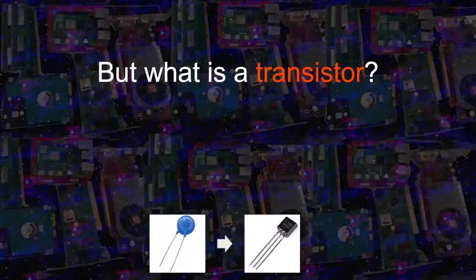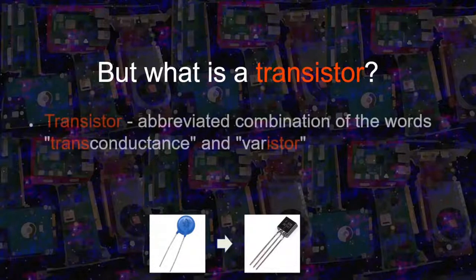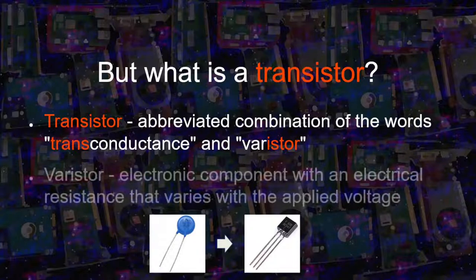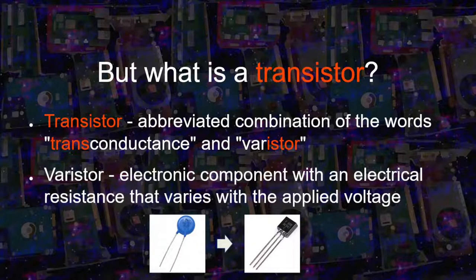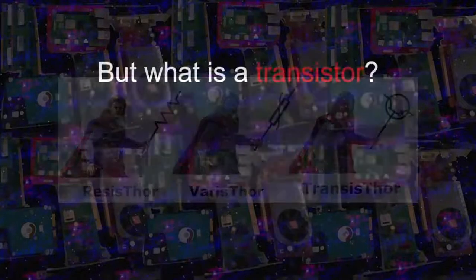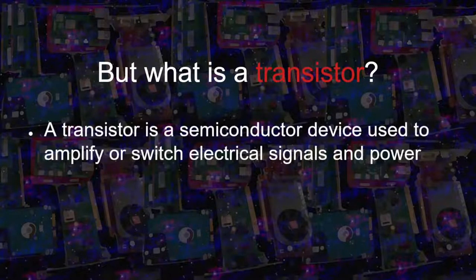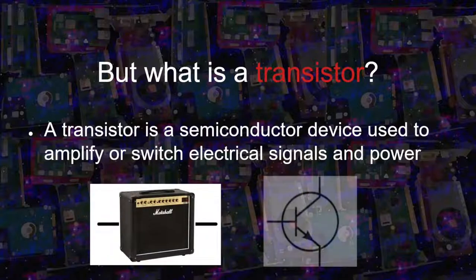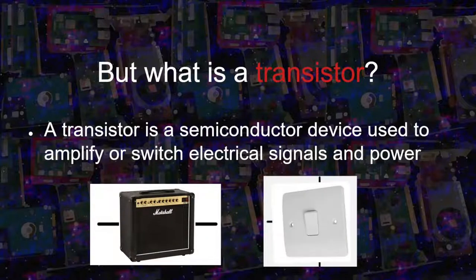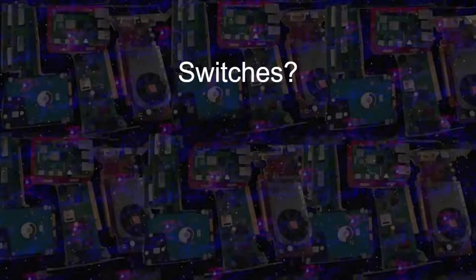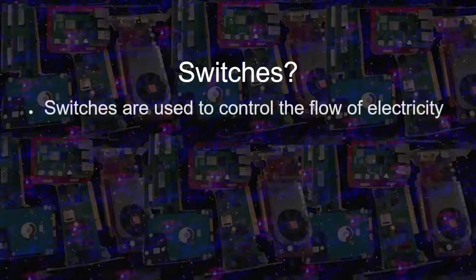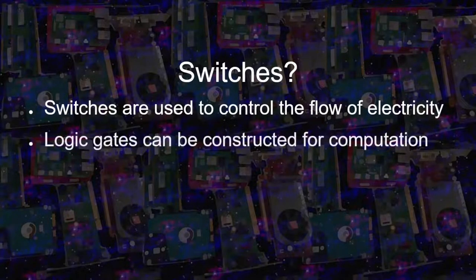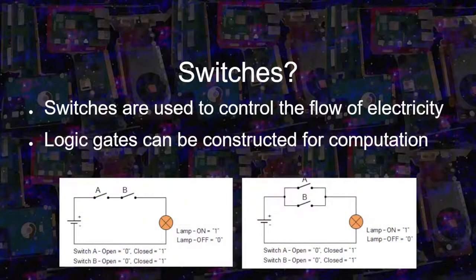But what really is a transistor? The word transistor comes from the combination of transconductance and varistor. A varistor is a type of electric component where the resistance varies according to the voltage being applied. A transistor is a semiconductor device that is used to amplify or switch signals and power. Switches are used to control the flow of electricity, and with them you can build logic gates that are used for computing.